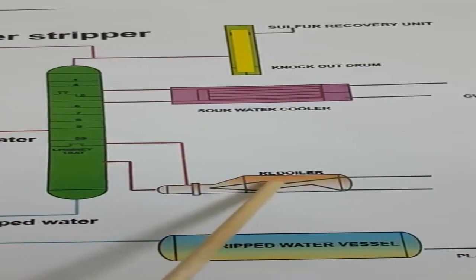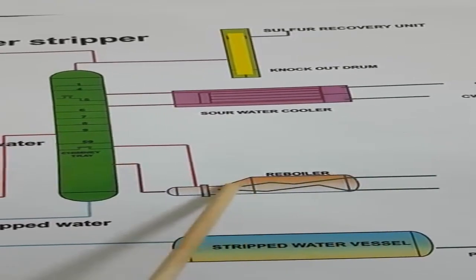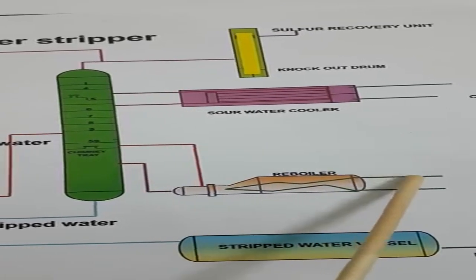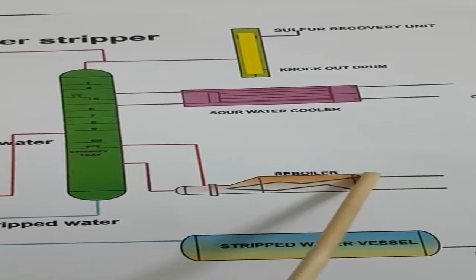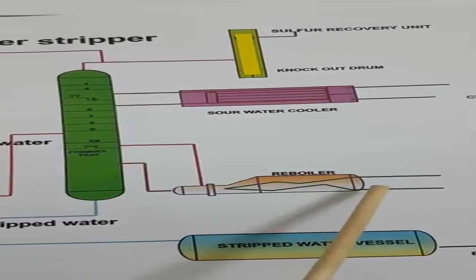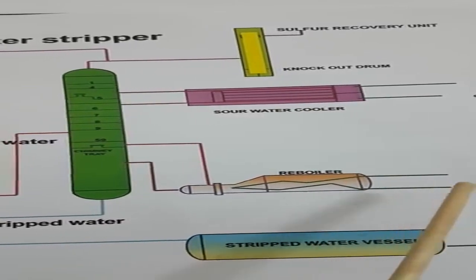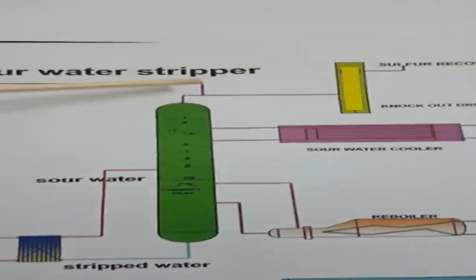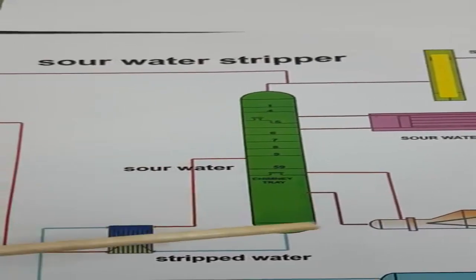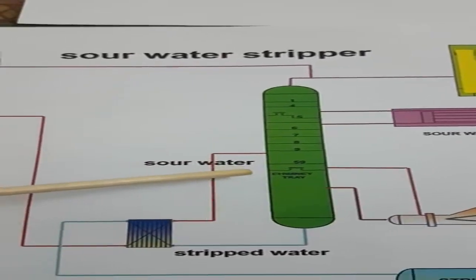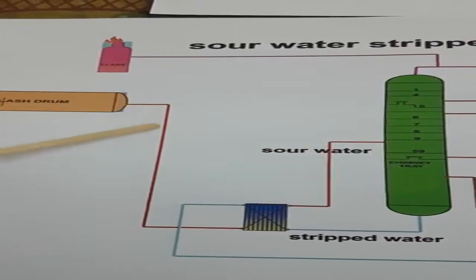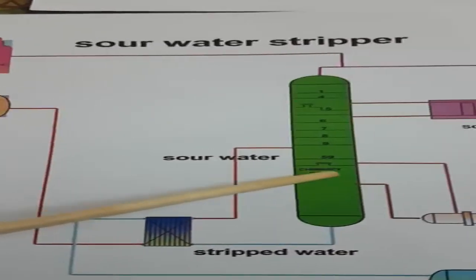Temperature in the reboiler is maintained with a continuous supply of steam. For medium pressure steam, the pressure should be about 3.5 to 4 kg/cm² gauge, and for high pressure steam it will be more than 12 kg/cm² gauge. Level in the stripper is maintained by a control valve: if the level decreases, the valve opens and sends sour water to the stripper.